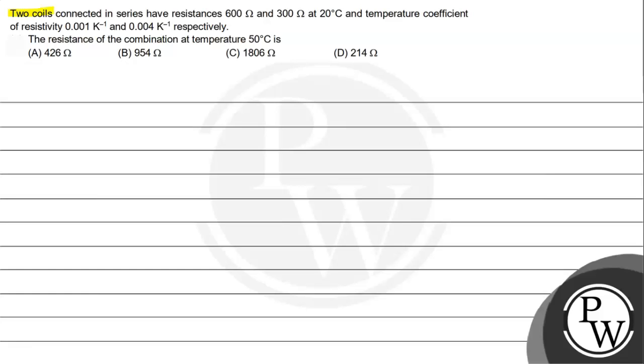Hello, let's read the given question. The question says two coils connected in series have resistances 600 ohm and 300 ohm at 20 degrees Celsius and temperature coefficients of resistivity 0.001 per kelvin and 0.004 per kelvin respectively.